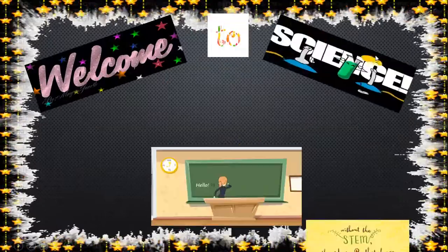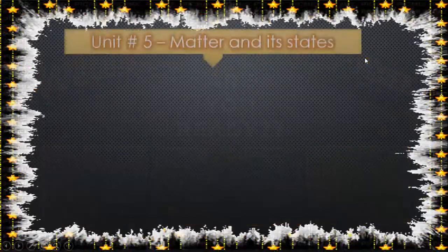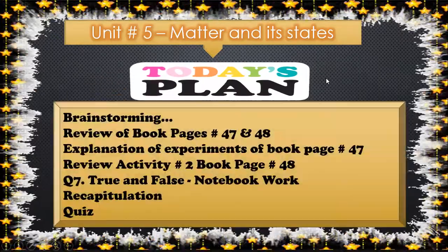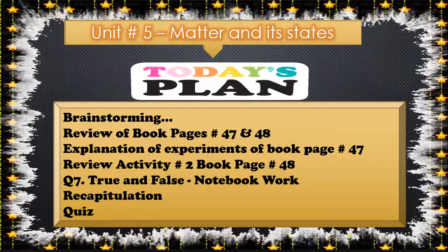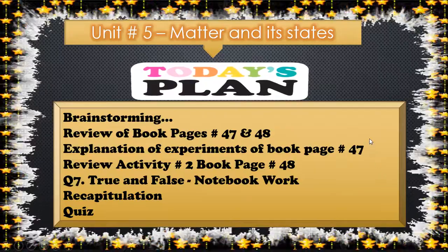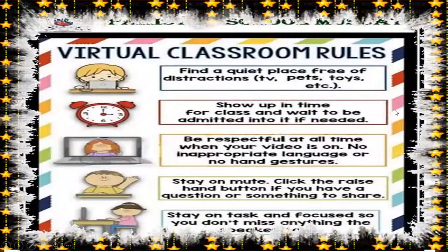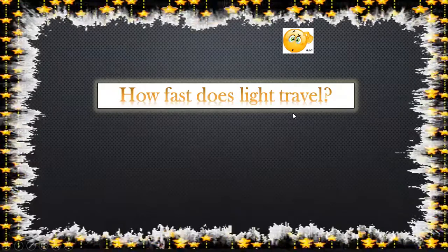Welcome to the science class, students. Are you ready to learn something new? This is the continuation of unit number five: Matter in Its States. The lesson plan includes brainstorming from unit number 12, review of book pages 47 and 48, explanation of the experiment on book page 47, review of activity number two on book page 48, notebook work question number seven, and then recap. Don't forget the rules — it will help you stay focused.